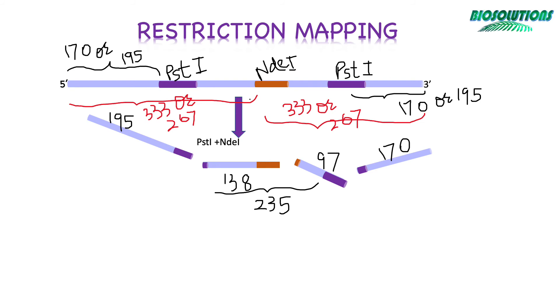Now we need to arrange these restriction sites to create a map. So we place the two PstI sites and one NdeI site in this order. It is still not possible to figure out whether the 170 base pair or 195 base pair fragment will be produced from the 5' end or 3' end. What matters is the correct placement of restriction sites, and the total should satisfy all the given fragment sizes.